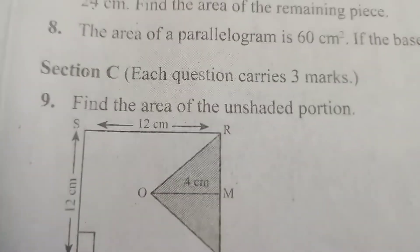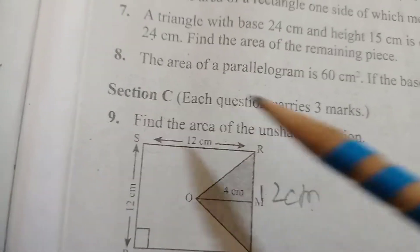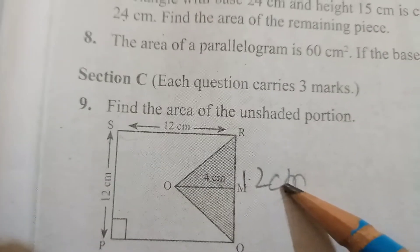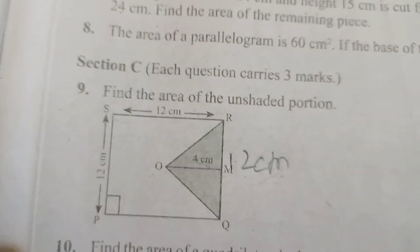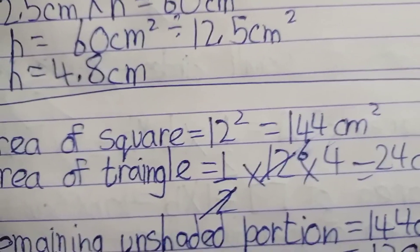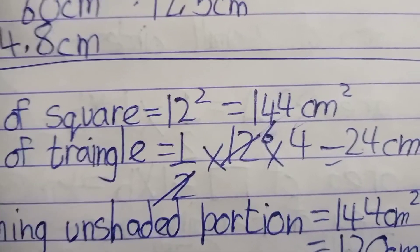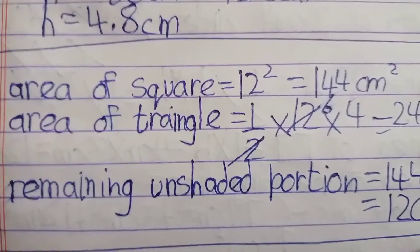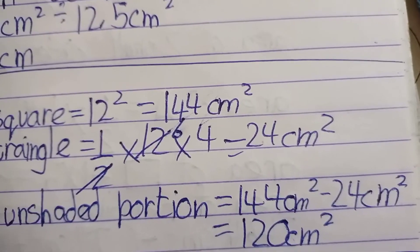The side is 20 cm. First find the area of the full square, then find the area of the triangle. The side is 12 cm. Area of square is 12 squared which is 144 cm square. Area of triangle is 1 over 2 multiplied by 12 multiplied by 4, which equals 24 cm square. So remaining unshaded portion of the square is 144 minus 24 which equals 120 cm square.